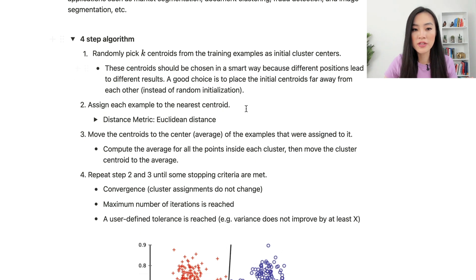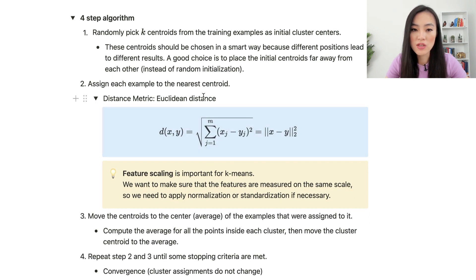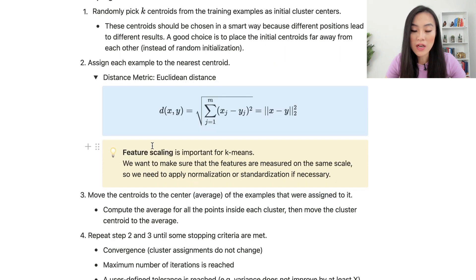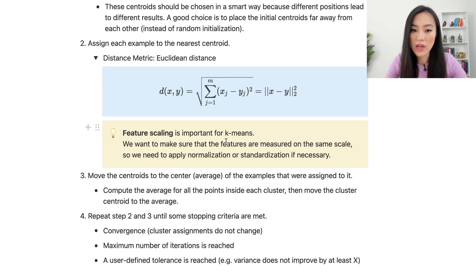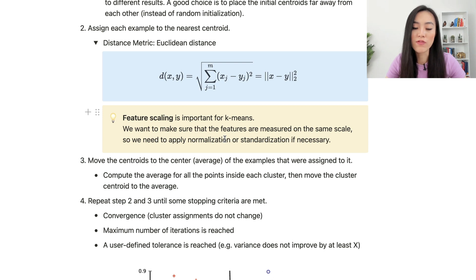After we have picked these K centroids, we then assign each example to the nearest centroid. In K-means we use Euclidean distance as the distance metric. We measure the distance between an example and the centroid using the Euclidean distance. Because of this, feature scaling is important for K-means. We want to make sure that the features are measured on the same scale, so we need to apply normalization or standardization if necessary.